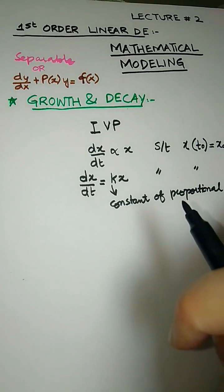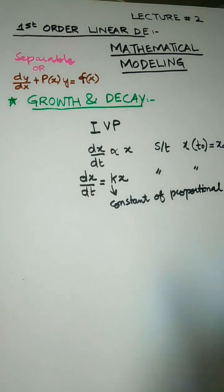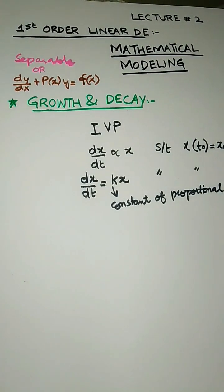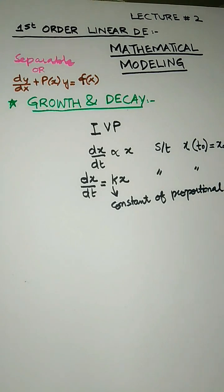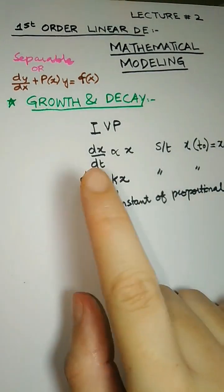For growth, examples include population growth — predicting how population grows in coming years — bacterial growth, multiplication of cells in a tumor, and neutrons in a nuclear reactor. Decay problems include radioactive decay, where a radioactive element disintegrates with respect to time.